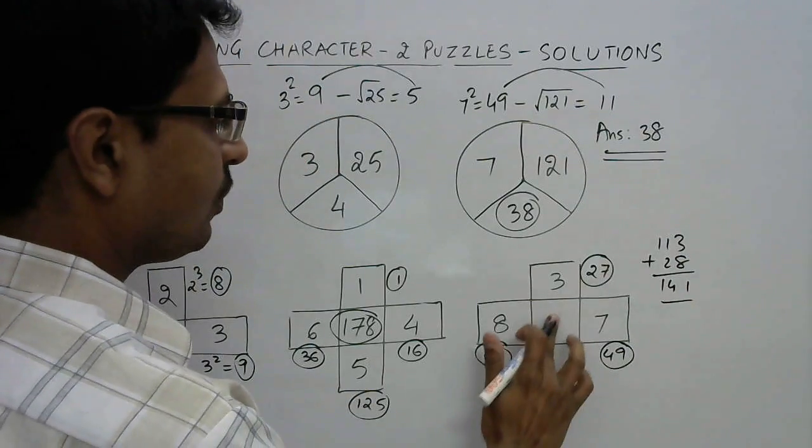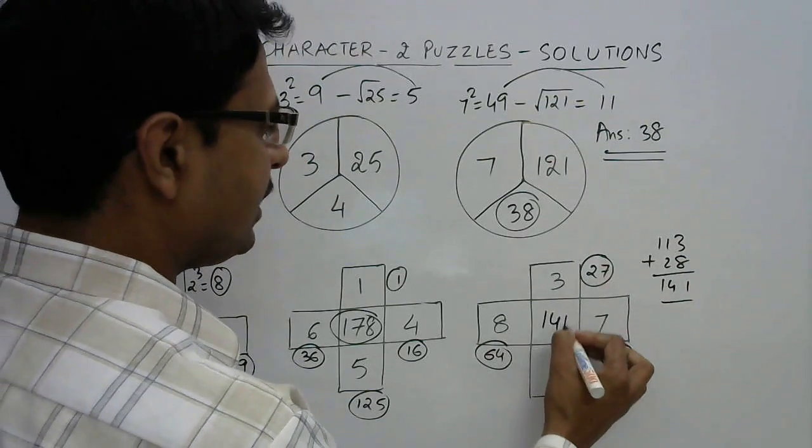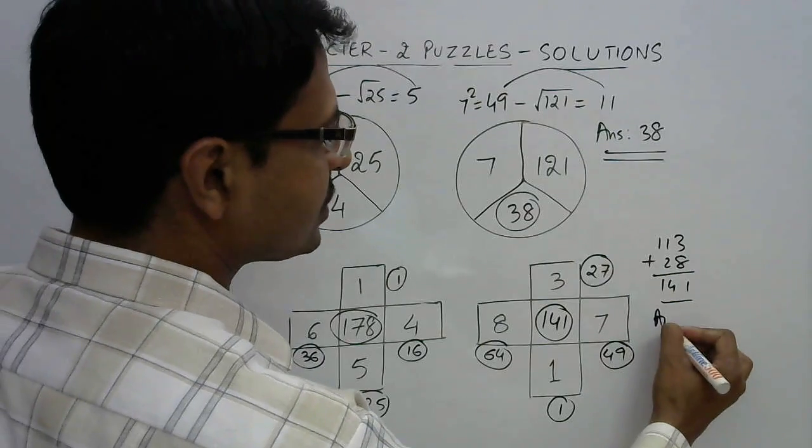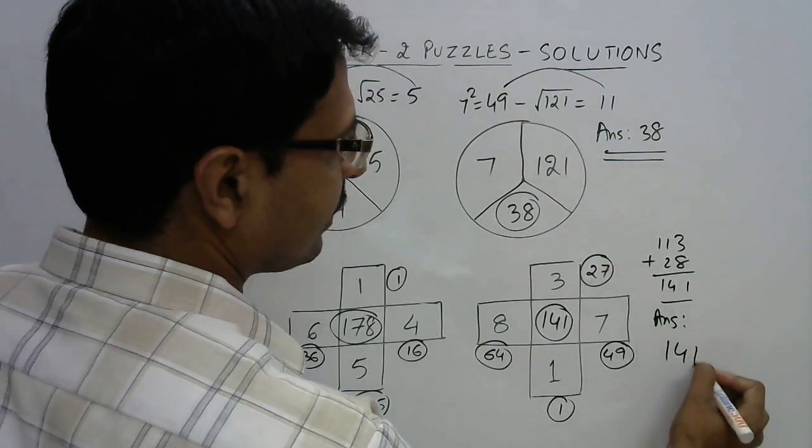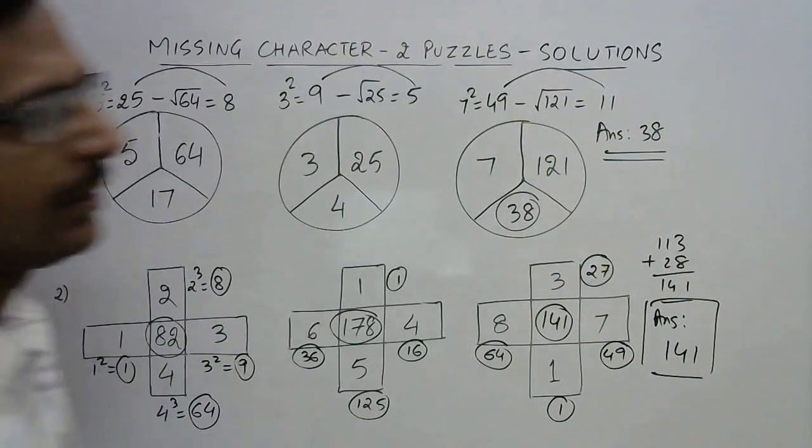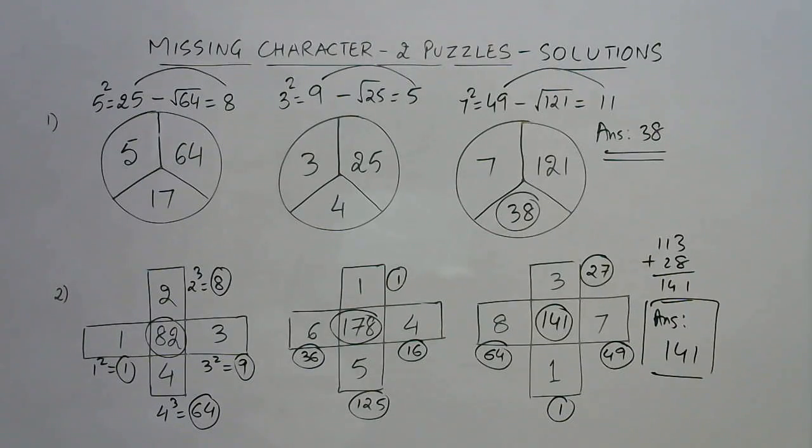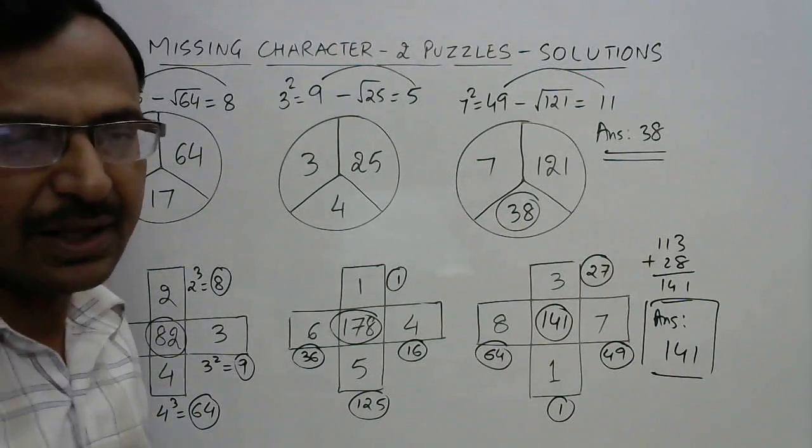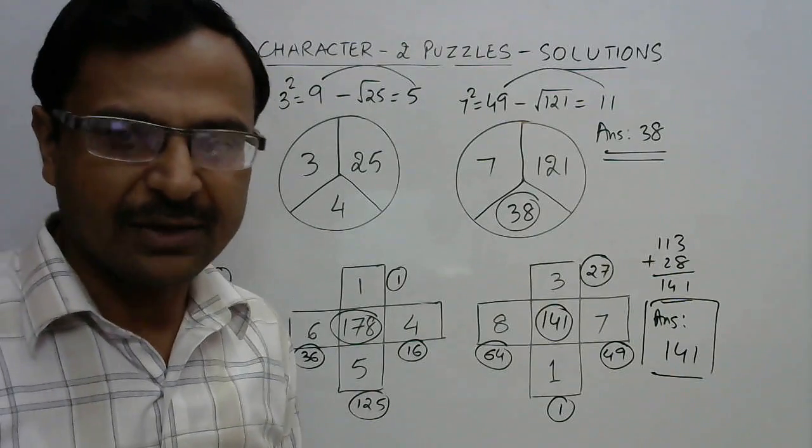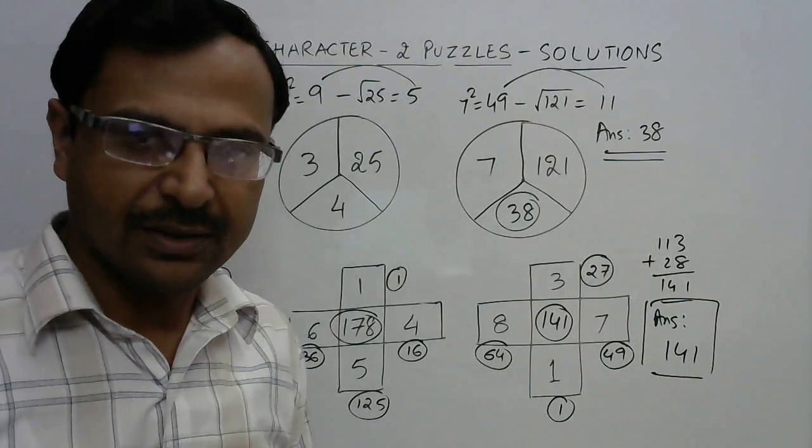Plus 28, so 113 plus 28 gives you the final answer for the question, which is 141. So the answer for the question is 141. I hope you got both the questions correct.